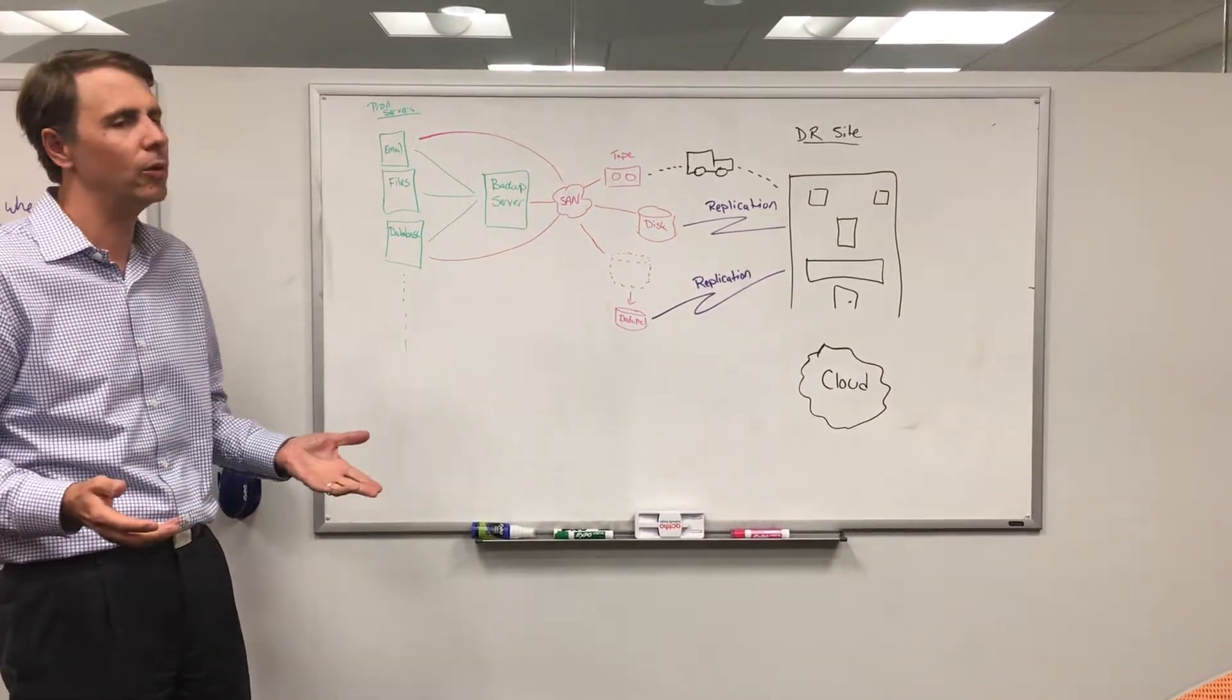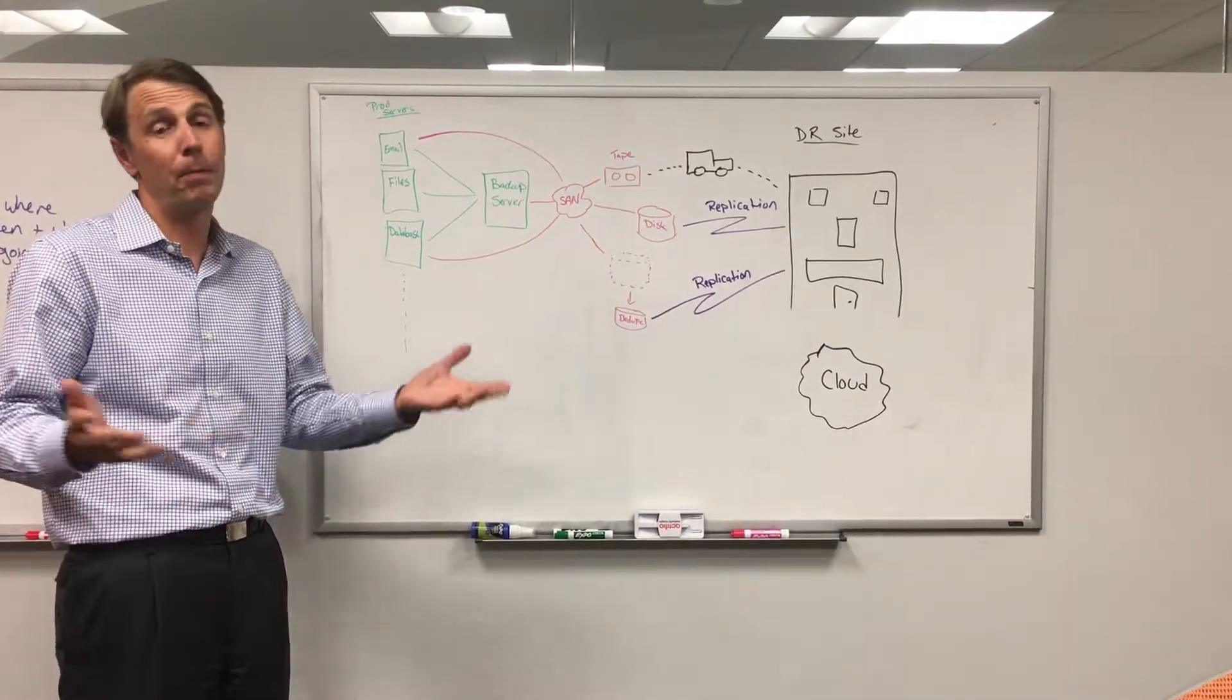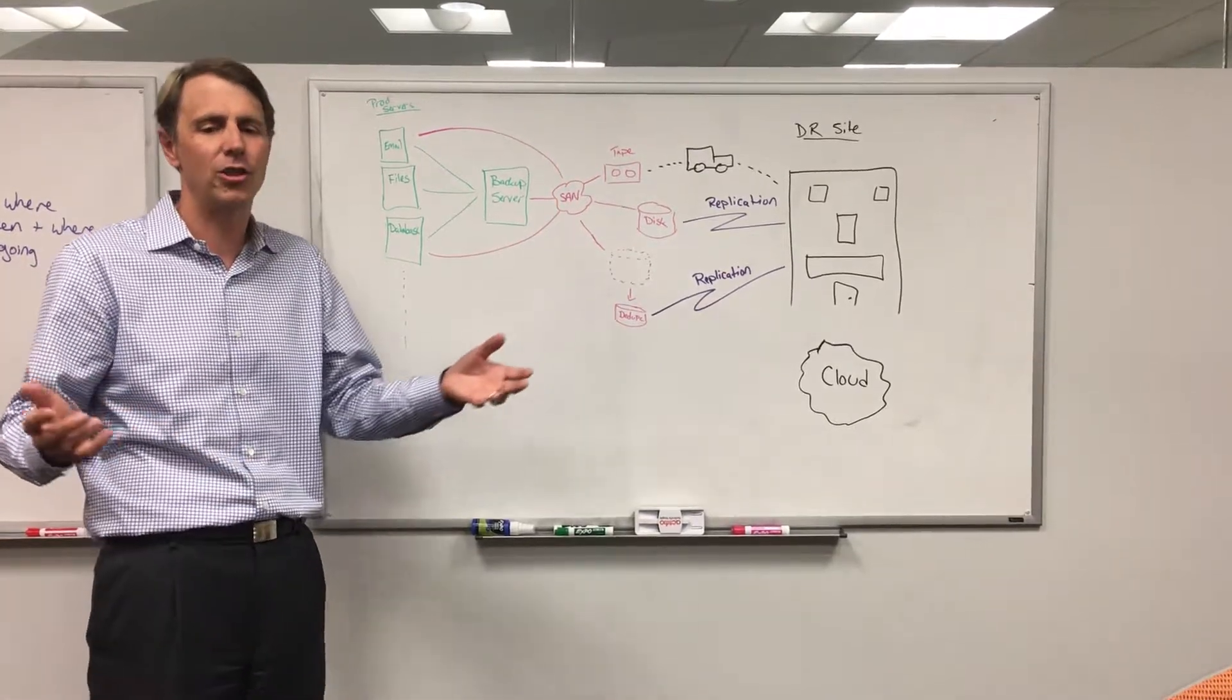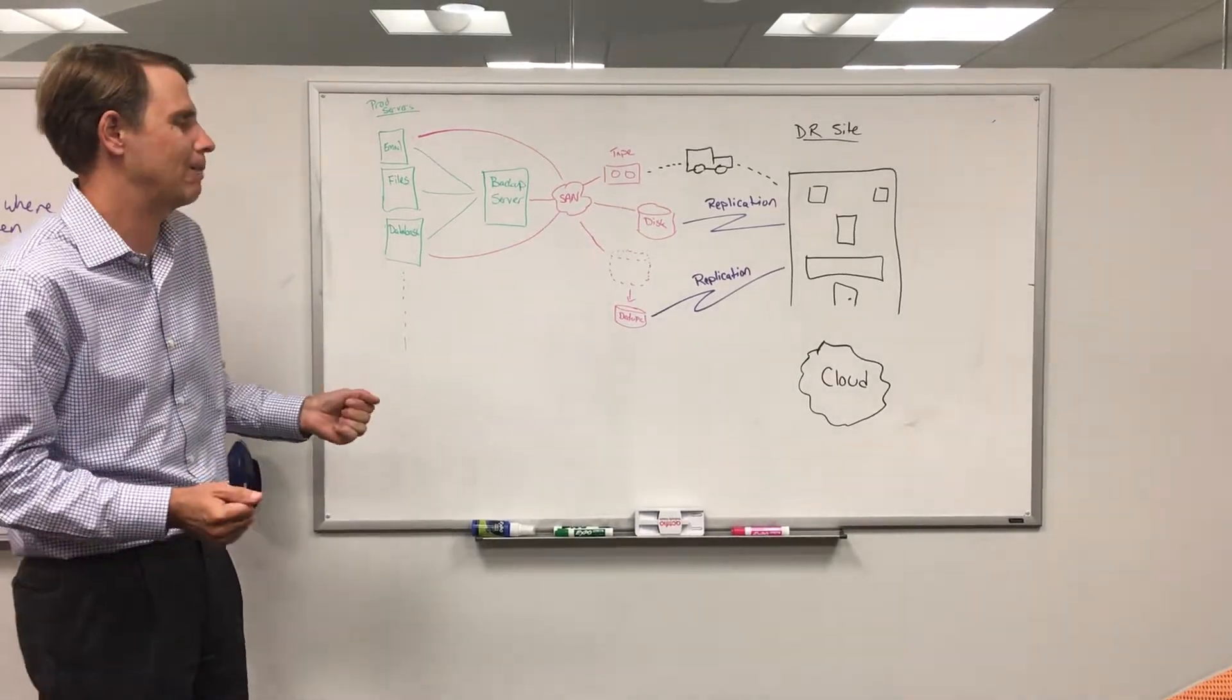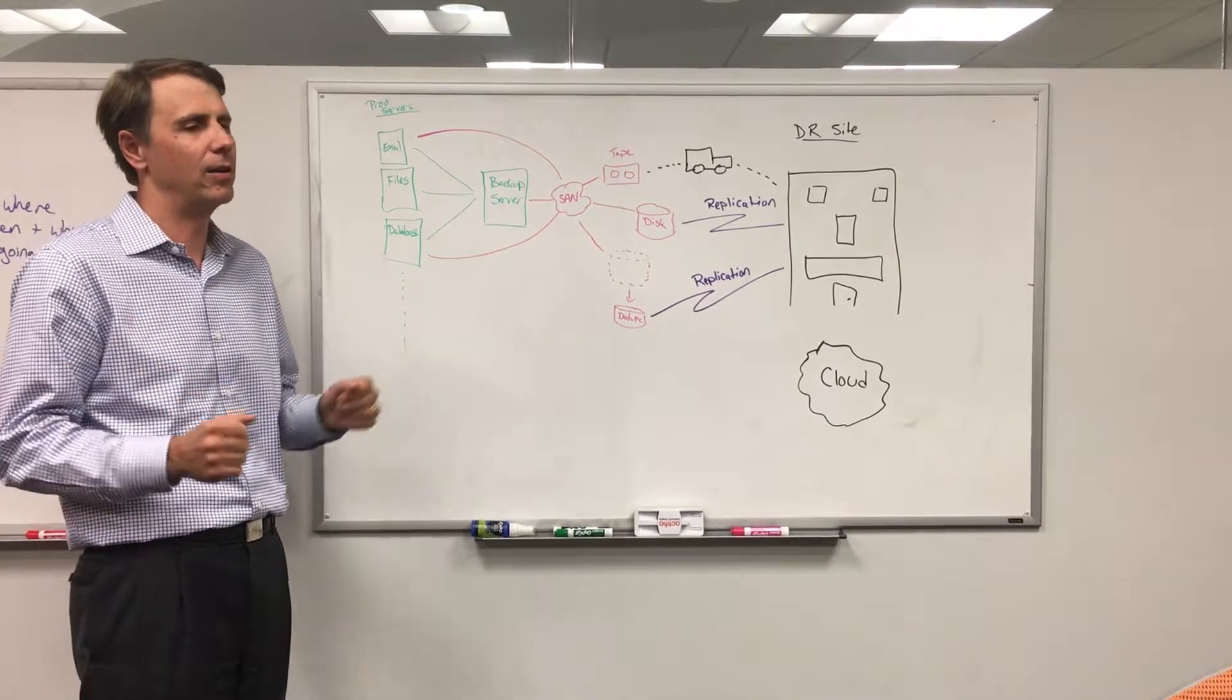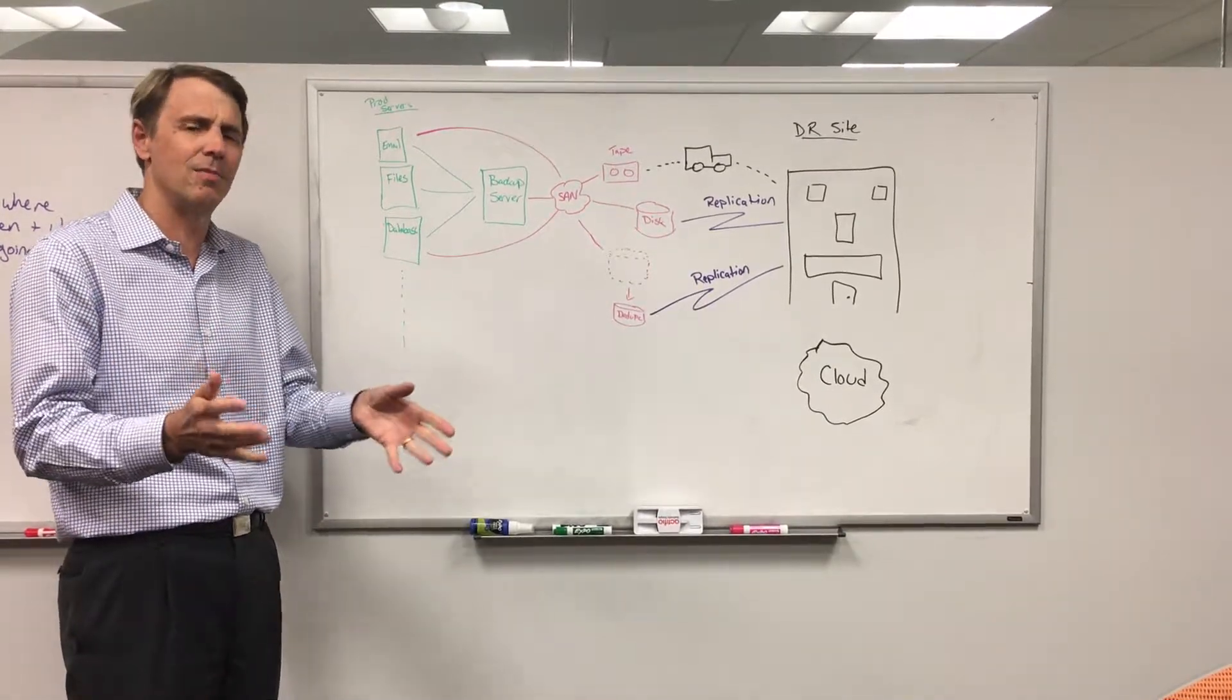What we should really do is now let's bring up these dedupe appliances. Dedupe appliances essentially take the data that comes in, they look at the various pieces and they shrink it out by taking stuff they've seen before. So then what backup app vendors did, they said, well, let's use dedupe targets. Now...